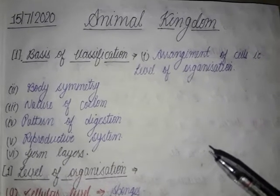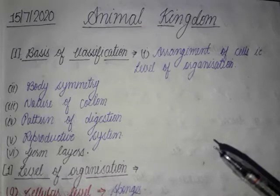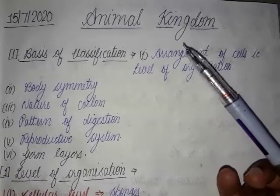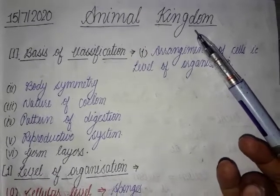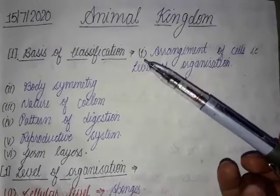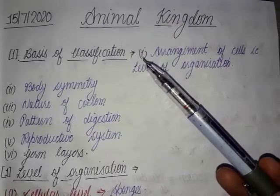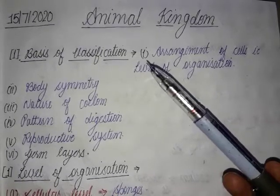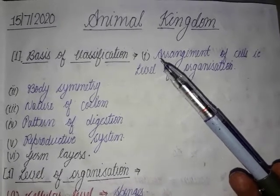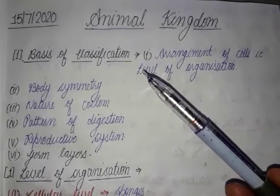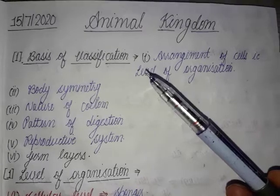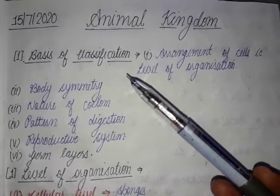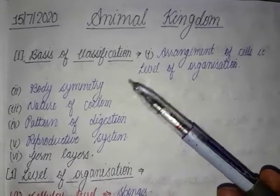Hello everyone, welcome back. Class 11th today we are going to discuss about Animal Kingdom. Animal Kingdom is the fourth chapter in class 11th biology. The third chapter, which is Plant Kingdom, has been removed from the syllabus because of COVID-19. So now your next chapter is Animal Kingdom. In Animal Kingdom, we will learn about the classification of animals.